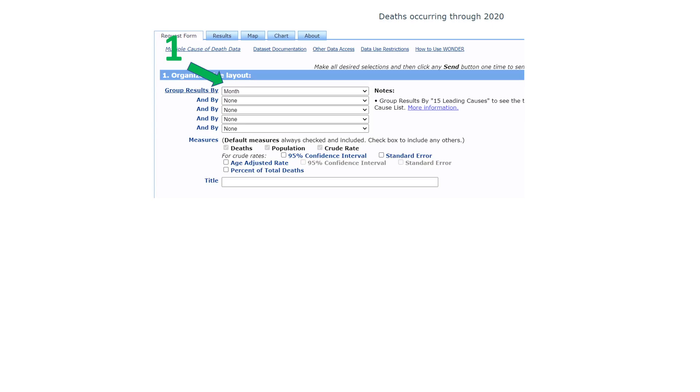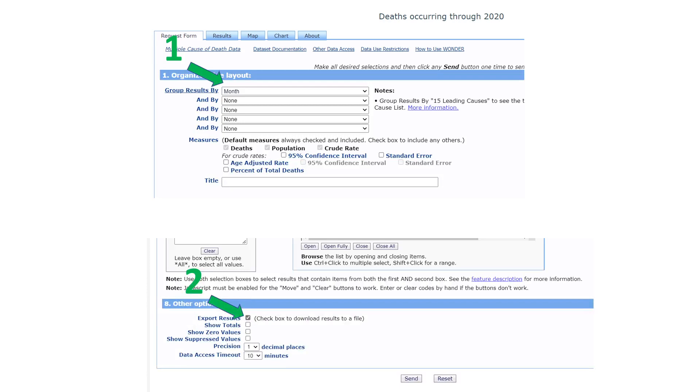I want monthly data so I can identify how many people died every month by these non-normal causes in 2020. I want to group the results not by census region, which is the default, but by month. Since I want the data exported, I select export results because it will export as a text file. I uncheck show totals. I click send, and the data is exported as a text file, which I store somewhere, usually in the download folder.